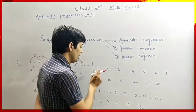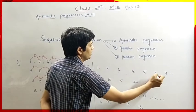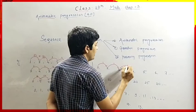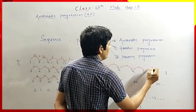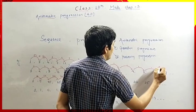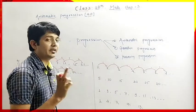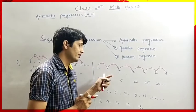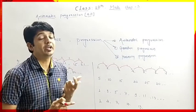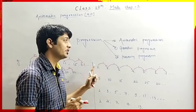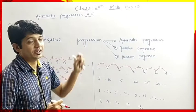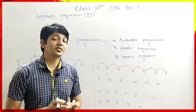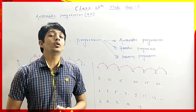Now here we have 1, 2, 3, 4, 5, 6, and 7. The difference between two consecutive terms is 1 throughout. Every next number is greater than the previous number by 1. This is a sequence, but in this sequence the difference between consecutive terms is always equal. That means this is a sequence, but it is also a progression — specifically, Arithmetic Progression. Arithmetic Progression is a progression of numbers in which the difference between two consecutive terms is always the same.